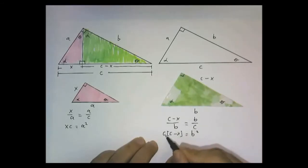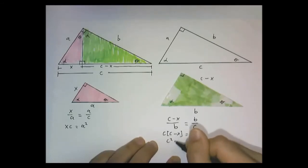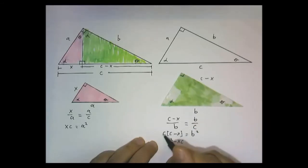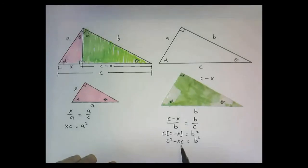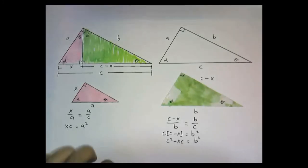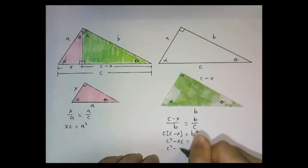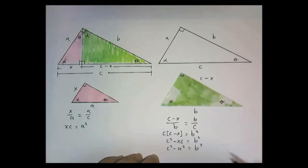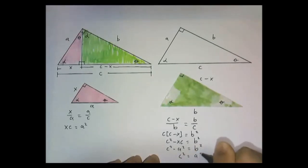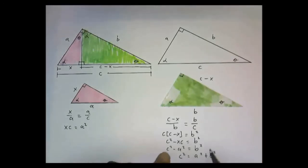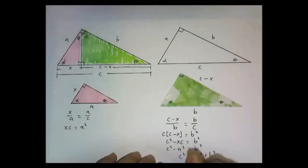C times C is C squared. C times x is XC. So we get C squared minus XC equals B squared. We have a minus XC right here, and we know that XC equals A squared, so in place of XC I'll substitute A squared — giving us C squared minus A squared equals B squared. Moving A squared over to the other side: C squared equals A squared plus B squared. I just added A squared to both sides, and we can rewrite this as A squared plus B squared equals C squared.